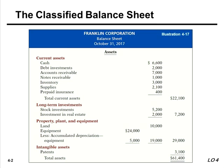We then have property, plant, and equipment, or fixed assets. In this illustration there are only two fixed assets: land and equipment. Land is not depreciable because it is considered to have an infinite life, meaning it can be used over and over again for different purposes. Equipment is a depreciable asset, and right under any depreciable asset should come the balance in the corresponding accumulated depreciation account. Here the accumulated depreciation balance of $5,000 is subtracted from the cost of the equipment of $24,000, giving us a book value of $19,000.